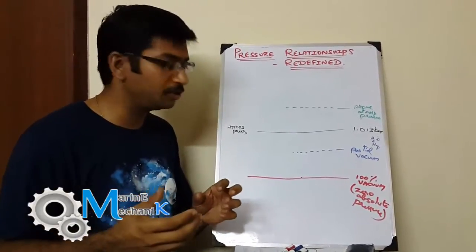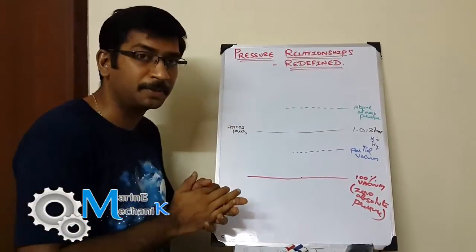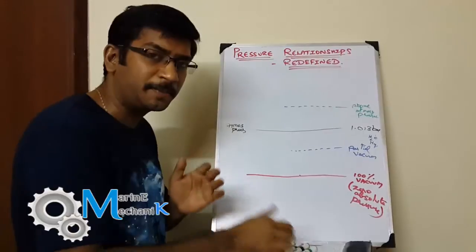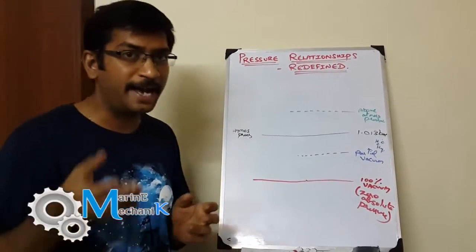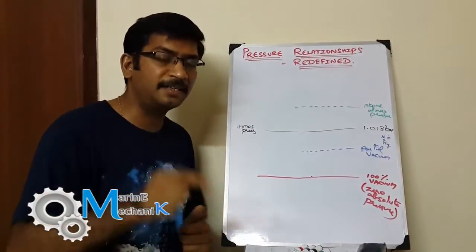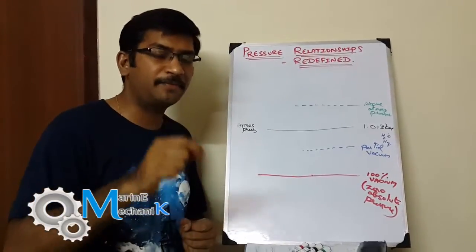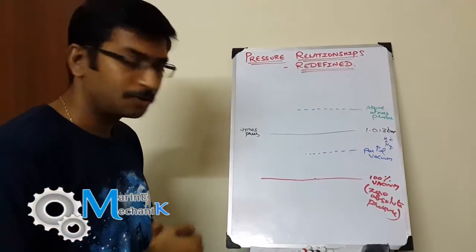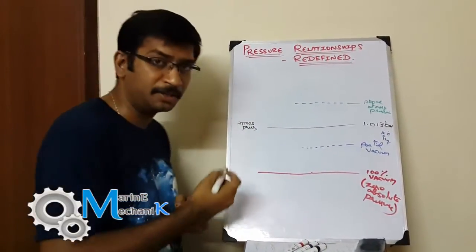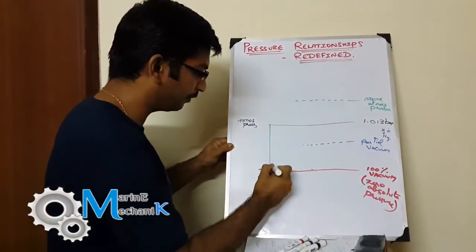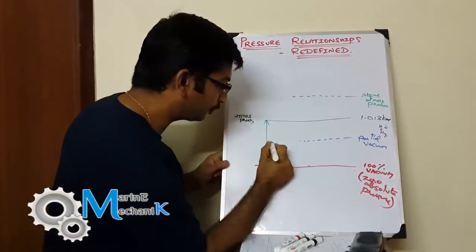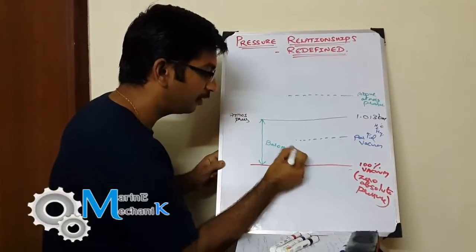How do you measure atmospheric pressure on ships? On the bridge, we have an equipment — a barometer — which measures the atmospheric pressure. Deck officers record this in the log every day. The barometer measures atmospheric pressure with respect to the zero absolute pressure line, and so this measurement is called barometric pressure.